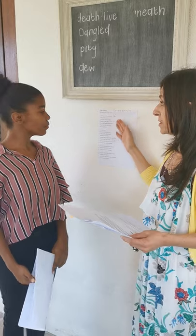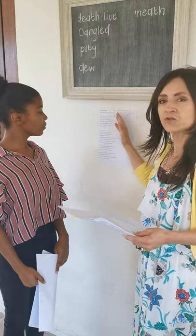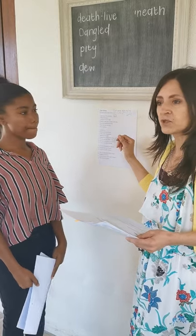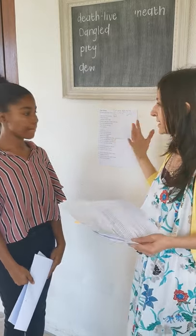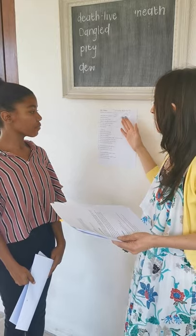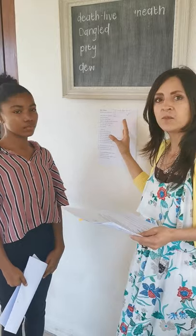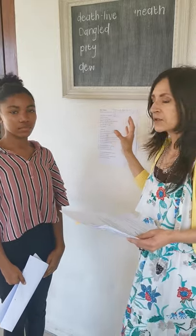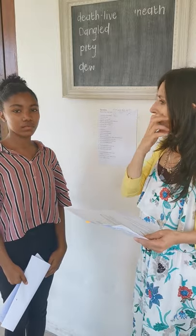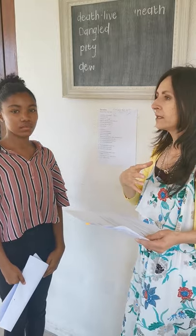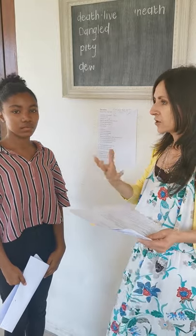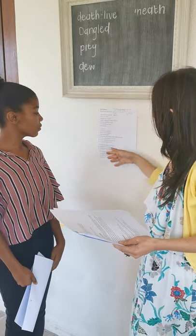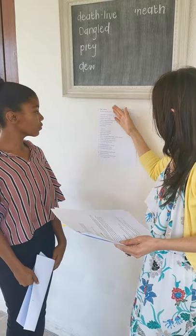The main figure of speech — because alliteration and those things are parts of figures of speech which make writing colorful — the main figure of speech in this poem is symbolism, because the clothes are symbolic of the loss of hope. So the main figure of speech is symbolism.